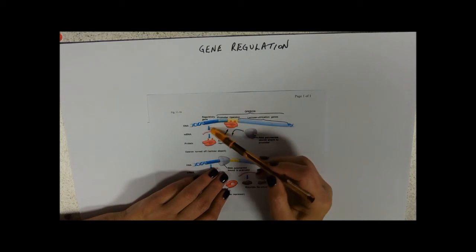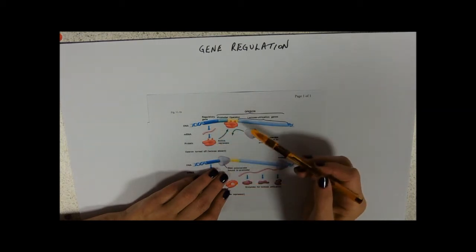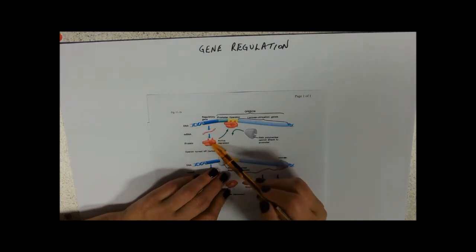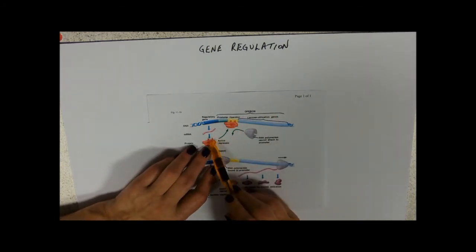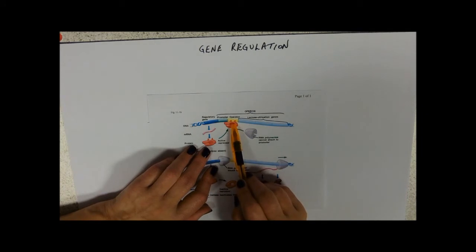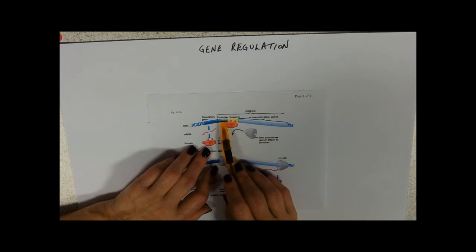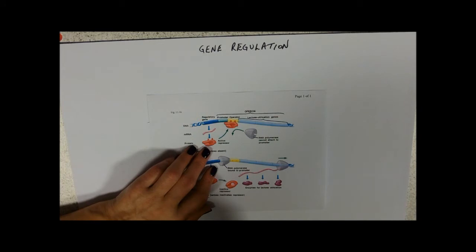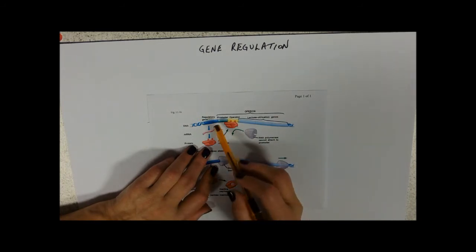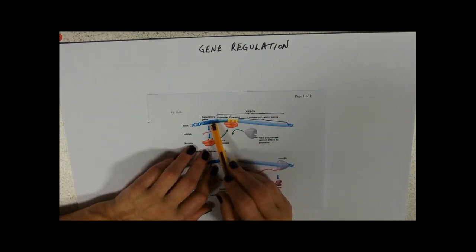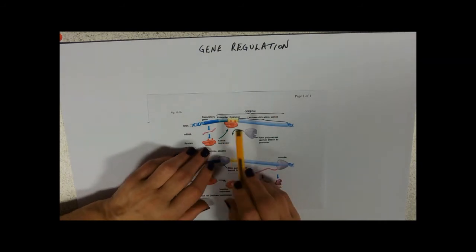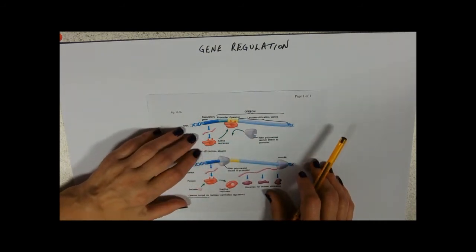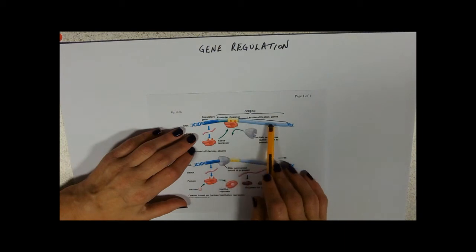Now the regulatory gene, when it's switched on, is producing messenger RNA and it's actually coding for another protein. That protein is binding to the operator and making sure that RNA polymerase can't attach to begin that transcription process. So that looks quite complicated, but just remember, a regulator gene makes a repressor which acts on the operator and prevents. So if it's being made, it's preventing the utilization.